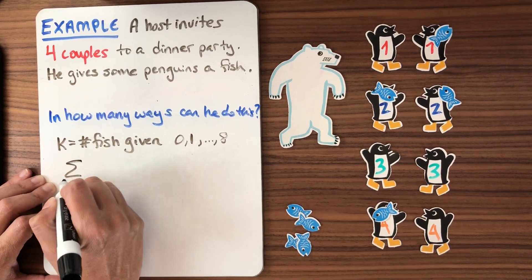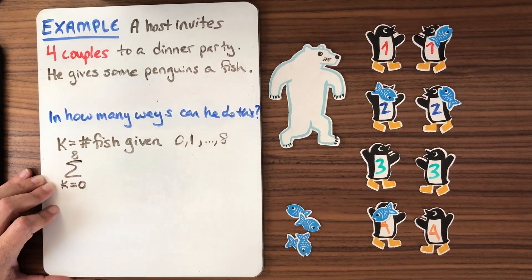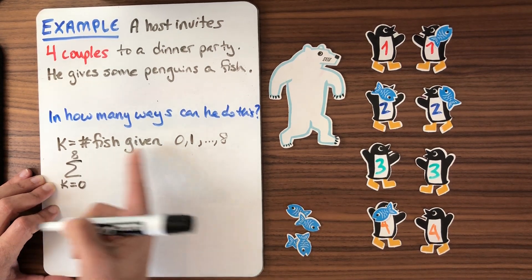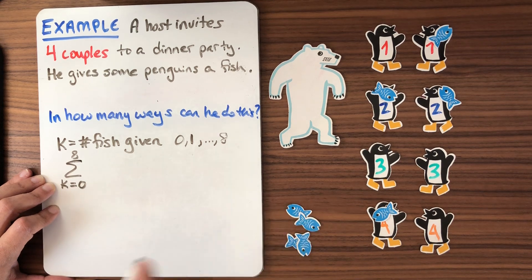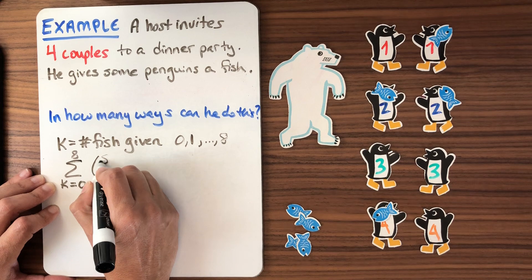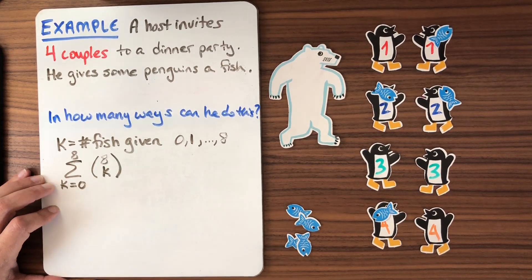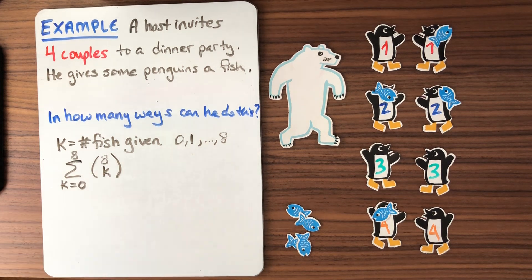So we can write this down as the sum from K equals zero to eight. That's the range of our fish. K has an interpretation in terms of the combinatorics here. And he'll have to take among his guests, choose who to give the fish to. And that's an expression. And we could evaluate that. We could just write it down. There are nine terms and we could work out what it is.